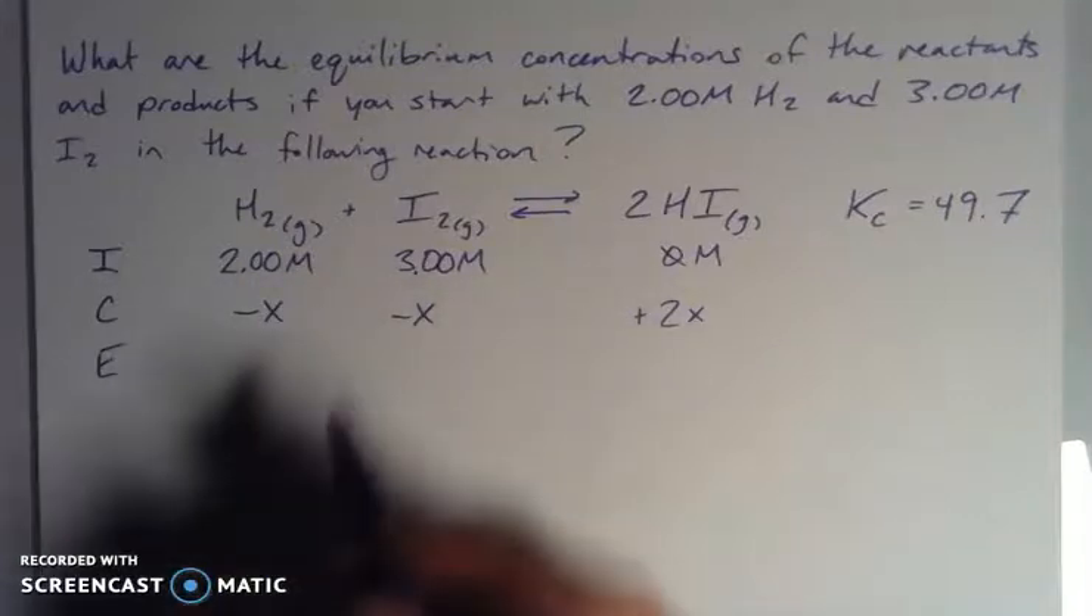Now the change comes from the coefficients in the balanced chemical equation. My reactants lose those molar ratios, so one to one here, and we pick up two of these guys because of the two coefficients. So positive for my products, negative for my reactants, because we're using these up to get to equilibrium and we're forming these to get to equilibrium. Now when we sum these together, we have 2.00 molar minus x, 3.00 molar minus x, and then the 2x for our hydrogen iodide.